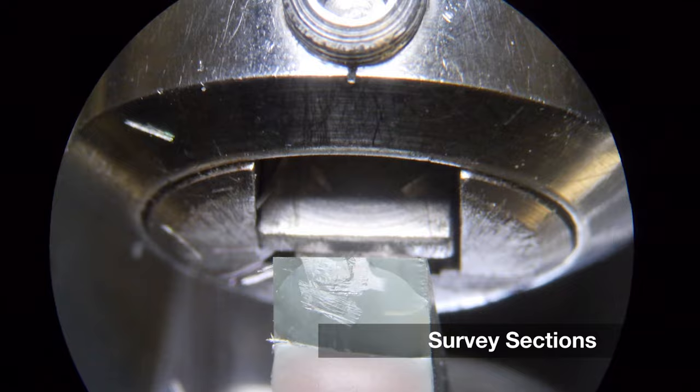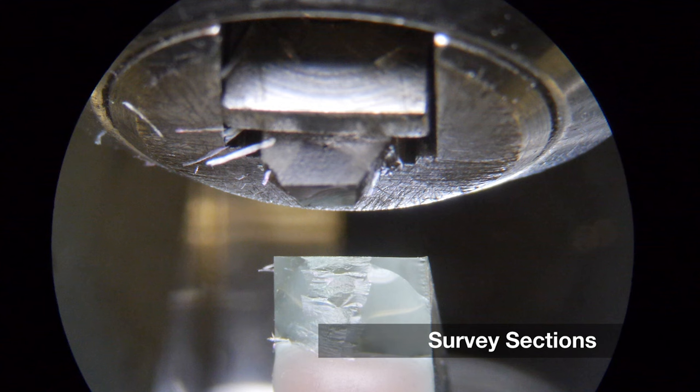The water bath is filled with water and sections, not 0.5 microns in thickness, are cut. These sections are called survey sections.